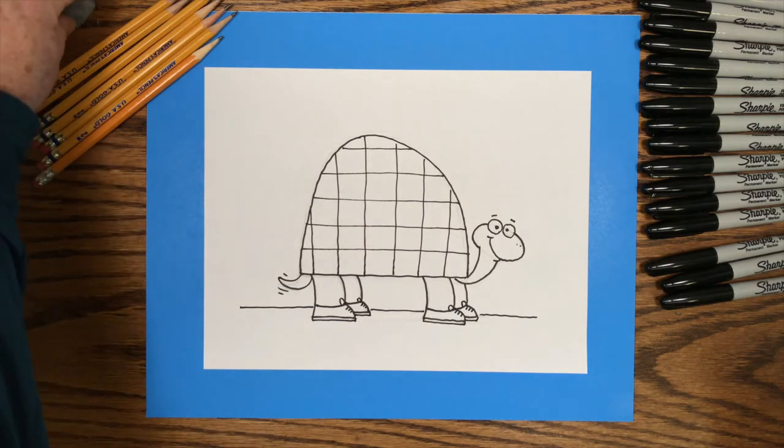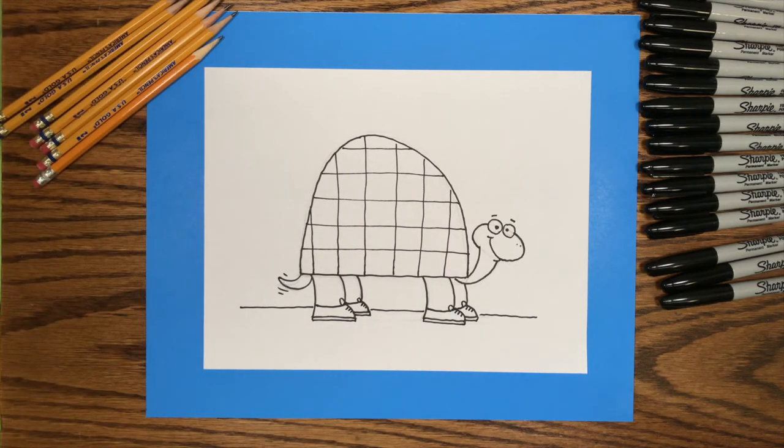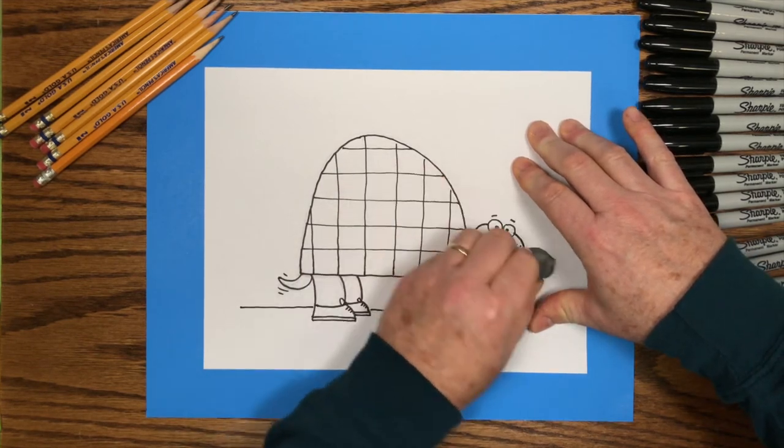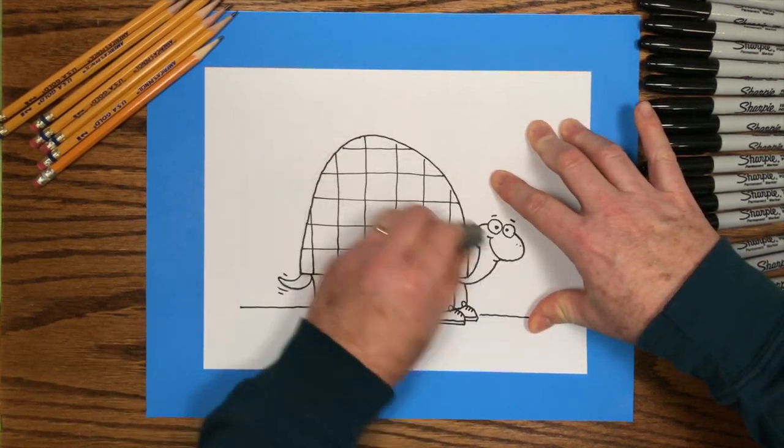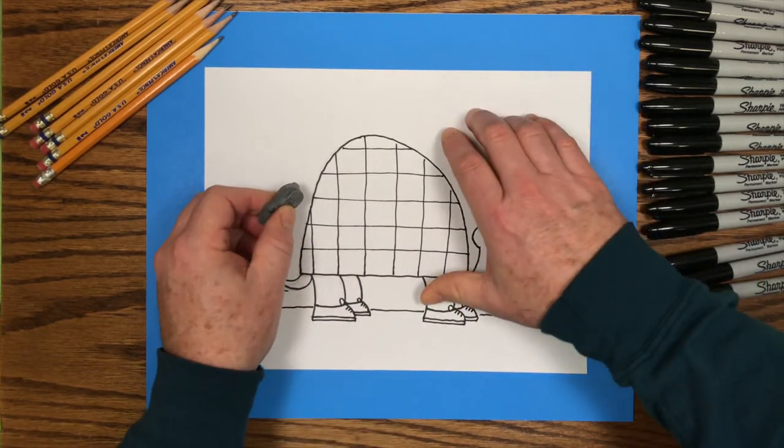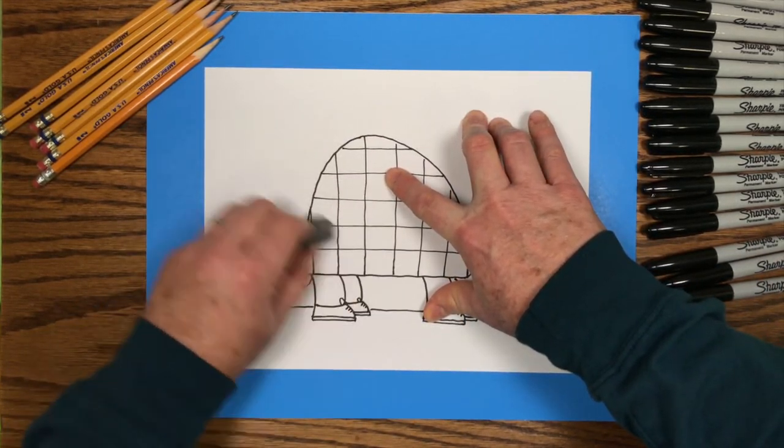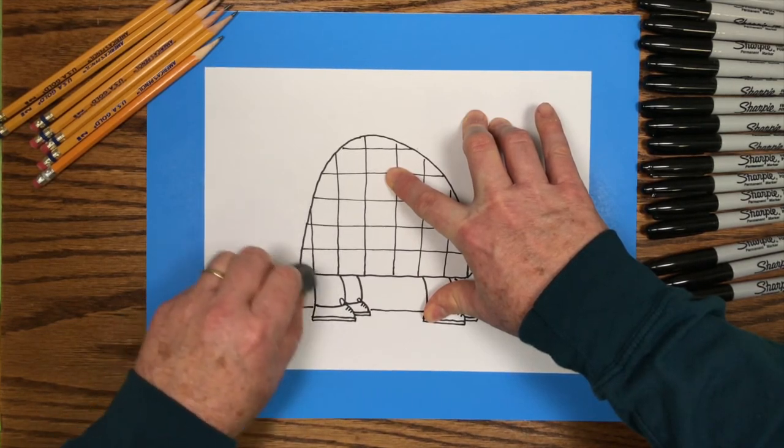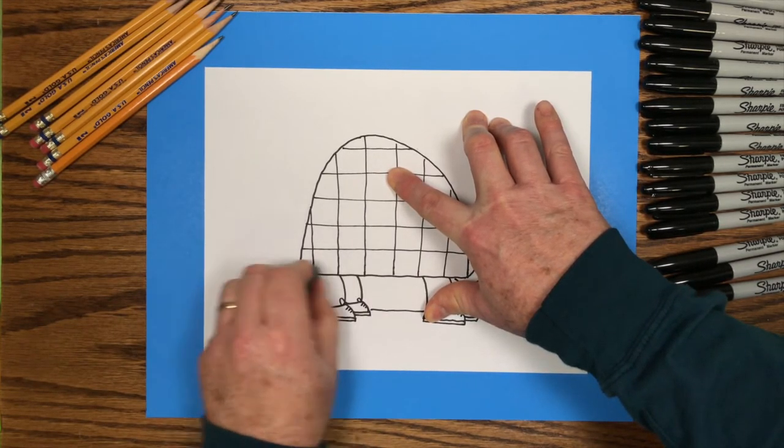Well, we finished the marker drawing. Now we can go back and erase the pencil lines. Those lines were helpful to know where to put the marker lines, but we're finished with the drawing, so we can go back and erase all of those pencil lines. And now we have a nice clean marker drawing, and it's time to add some color.